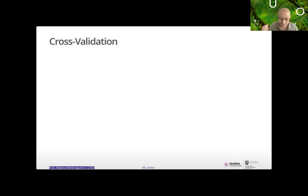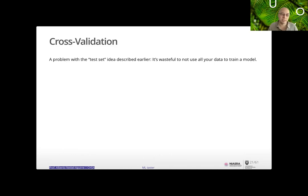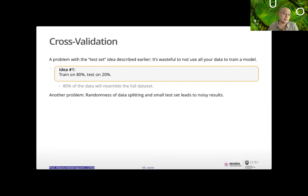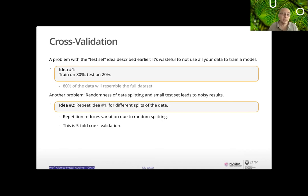The message is it's not simple to just say 'let's do the more complex thing.' This drives us to cross-validation. One problem with separating into just a test set is that it may be wasteful — you're not using all your data to train. The first idea is train on 80% and test on 20%, hoping 80% resembles the full dataset. But the randomness of how you split may introduce noise in the results.